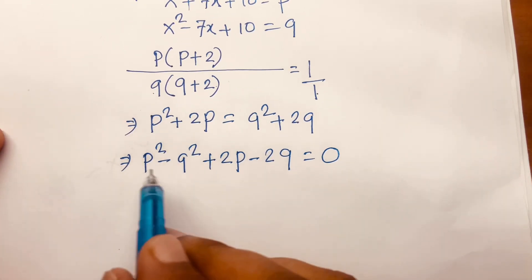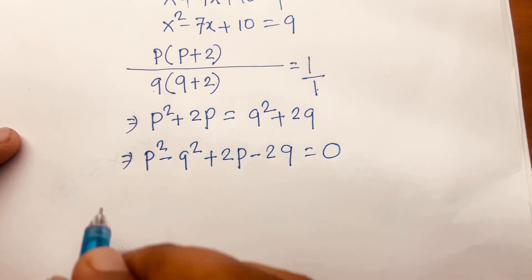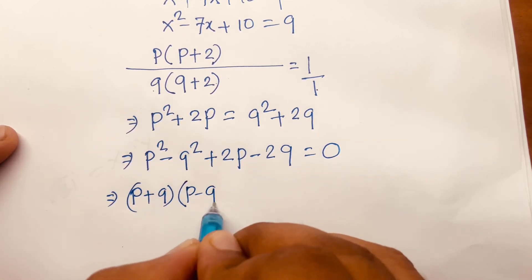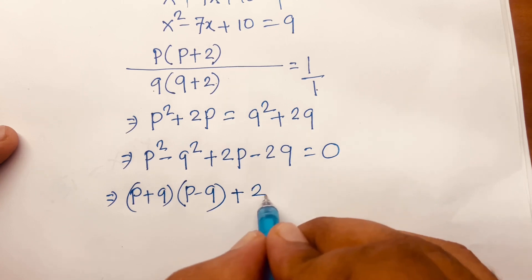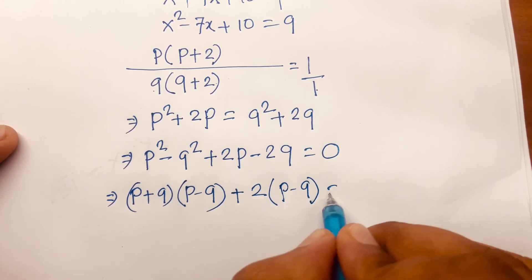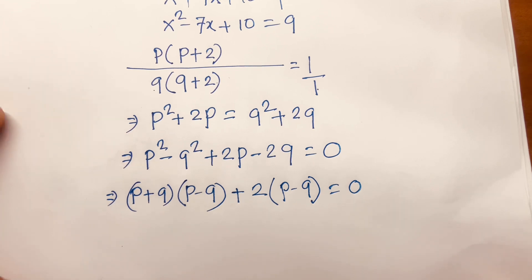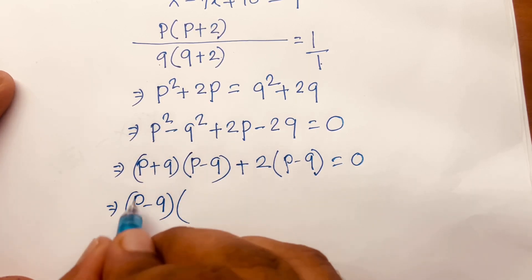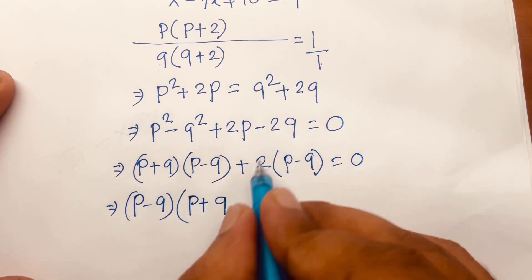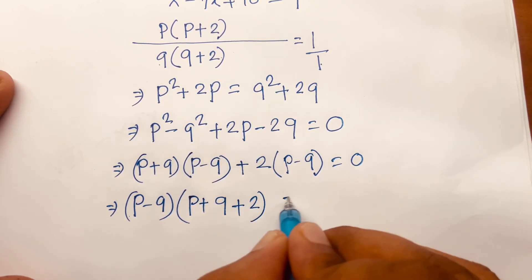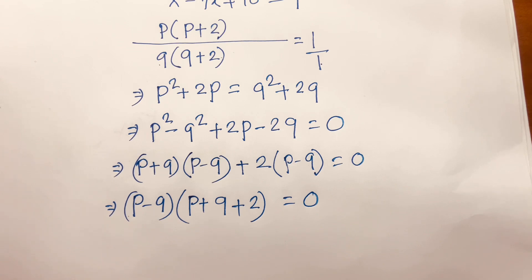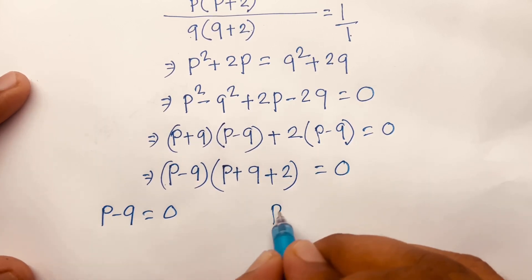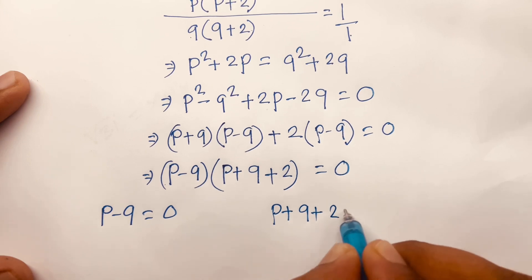We know that a squared minus b squared equals a plus b times a minus b. So I can say here is p plus q times p minus q, plus 2 is common, so plus 2 times p minus q equals 0. Then p minus q is a common factor, so factoring gives p minus q times p plus q plus 2 equals 0.